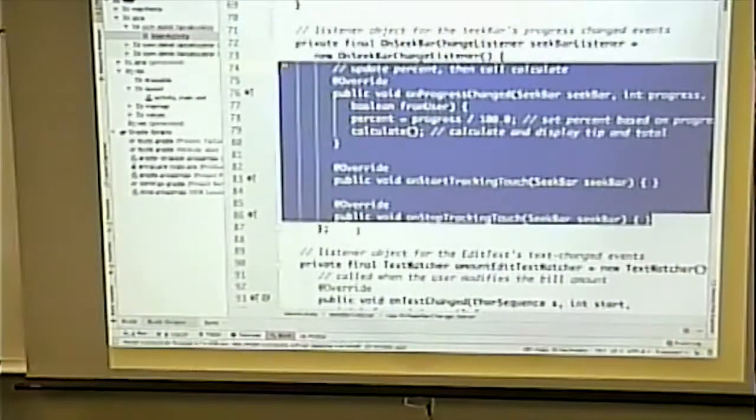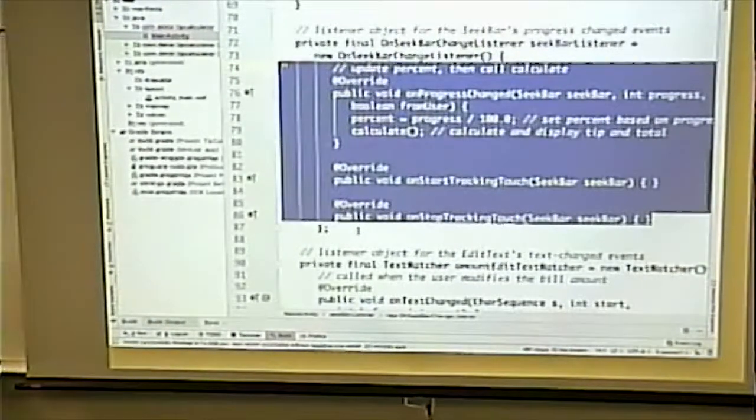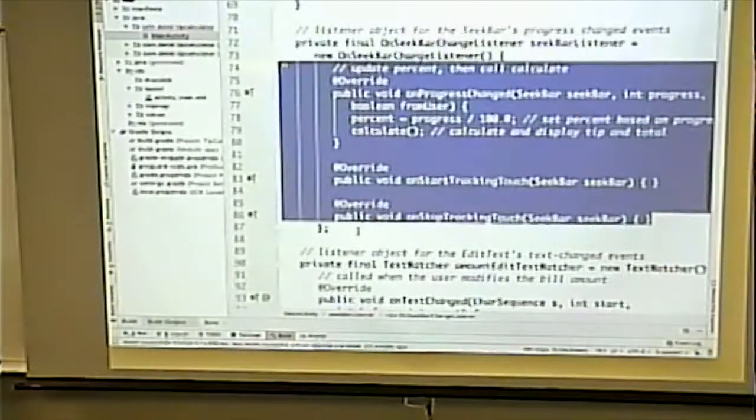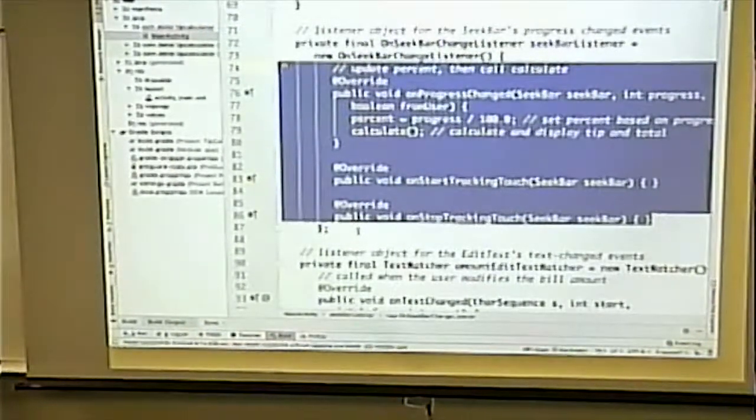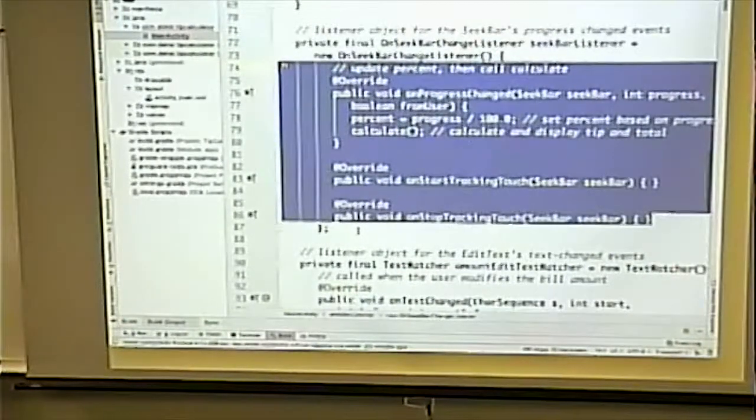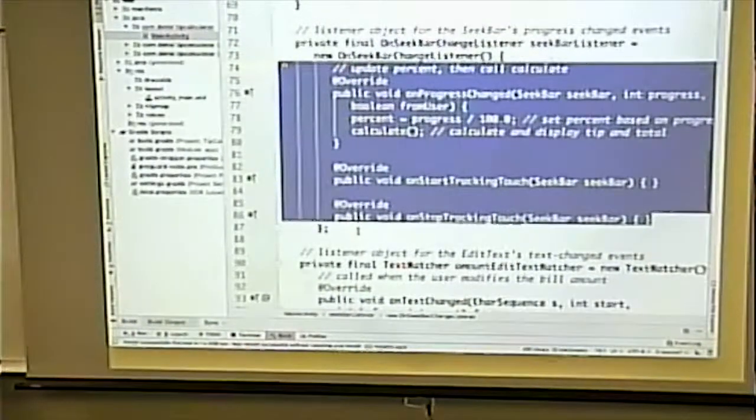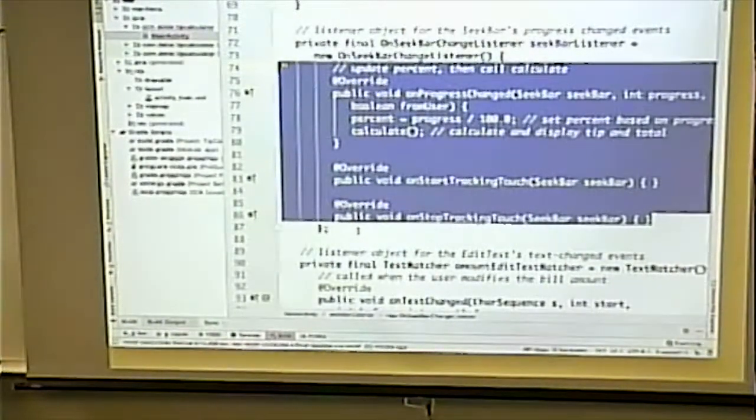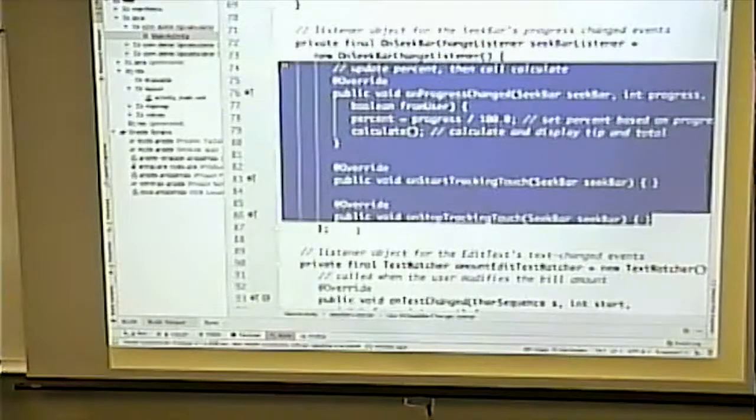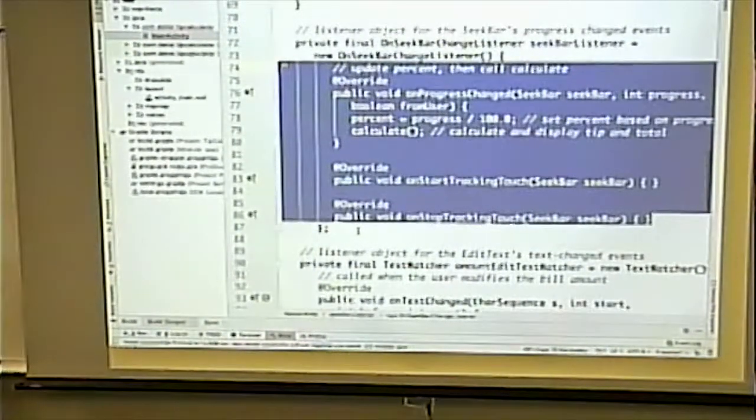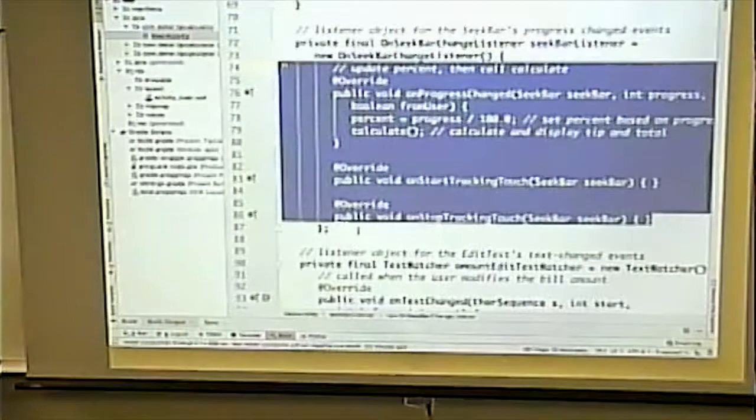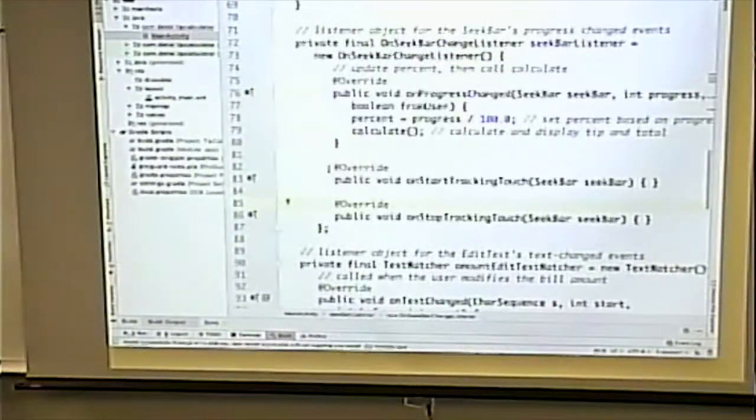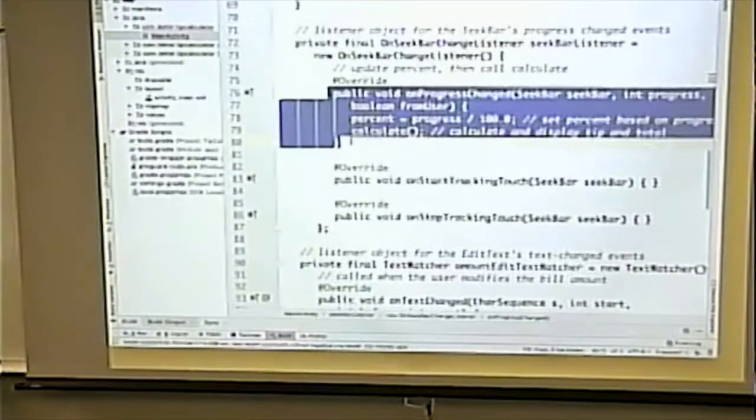That implements on seek bar change listener. And is defined inside another class. So this would be an inner class. Because it's defined inside another class. This would also be an anonymous class. Because there is no class name associated with this. We simply specify that we're implementing that interface. And we're supplying the code for the class. For the implementation right here. Well, we can conclude from this that there must be three methods in an on seek bar listener. On seek bar change listener. How can I conclude that?